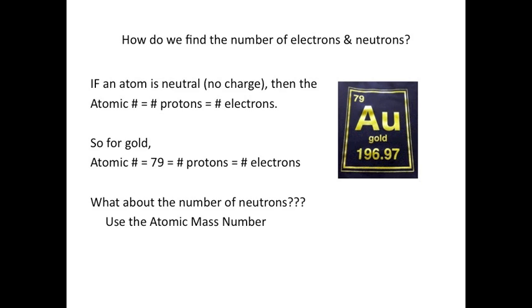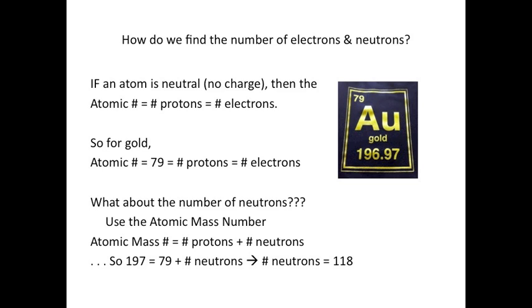But what about the number of neutrons? For that, we'll use the atomic mass number. In gold's case, 196.97. Remember that the atomic mass number is the number of protons plus the number of neutrons. So after a little bit of math, we get that the number of neutrons in gold is 118, approximately.